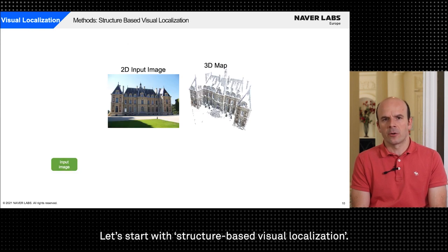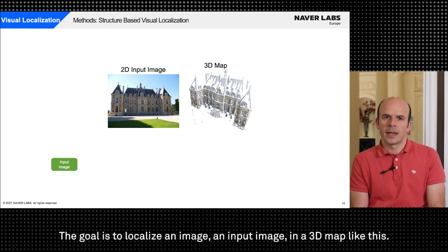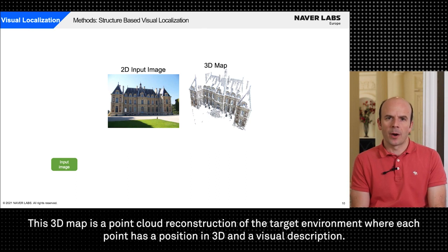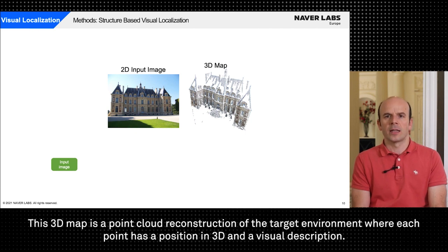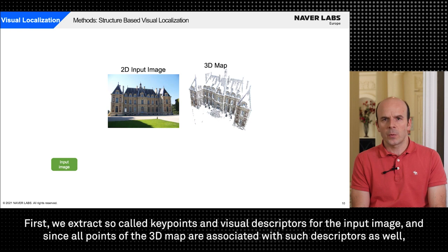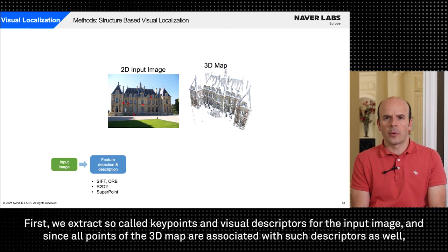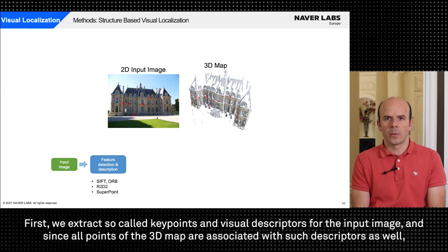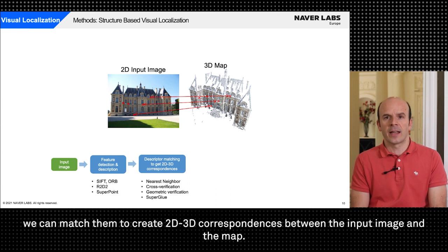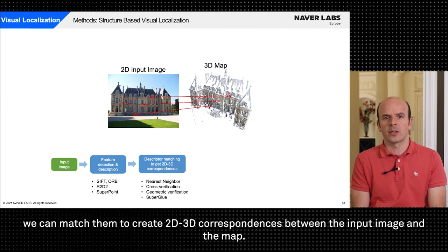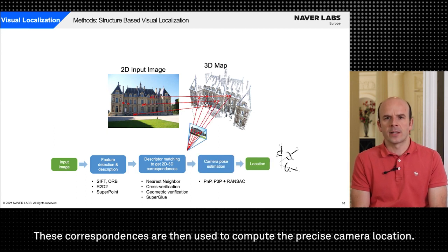Let's start with structure-based visual localization. The goal is to localize an input image in a 3D map like this. This 3D map is a point cloud reconstruction of the target environment where each point has a position in 3D and a visual description. First we extract so-called keypoints and visual descriptors for the input image and since all points of the 3D map are associated with descriptors as well we can match them to create 2D-3D correspondences between the input image and the map. These correspondences are then used to compute the precise camera location.